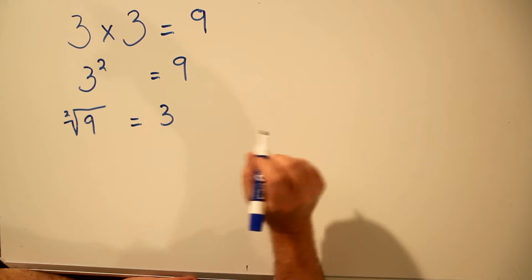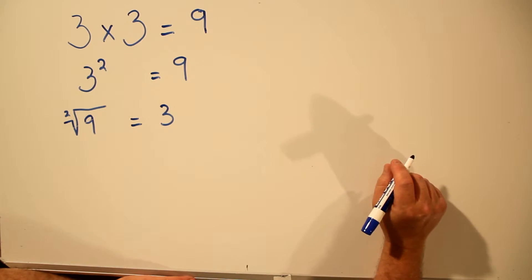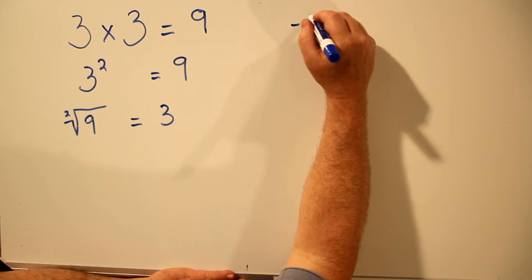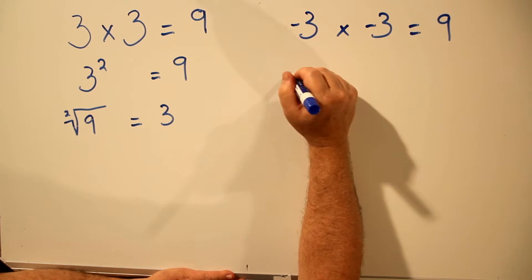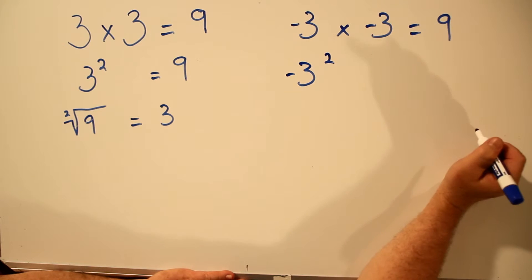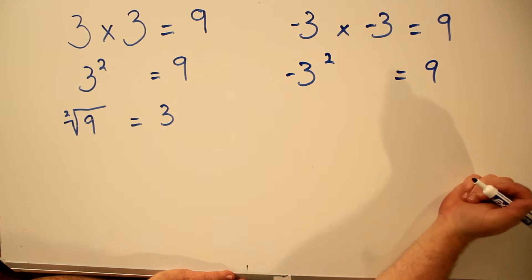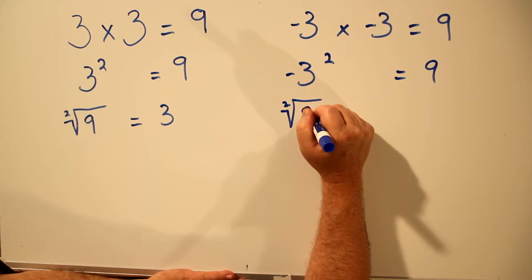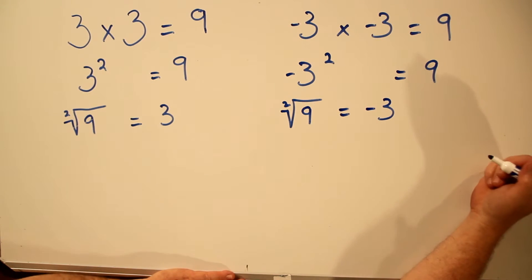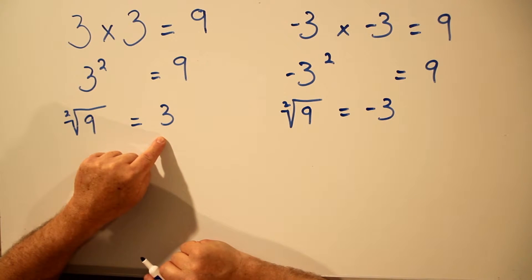So let's go back to the square root of 9 equals 3, because there's something else you need to know. Negative 3 times negative 3 equals positive 9. Therefore, negative 3 squared equals positive 9. It's correct to say the square root of positive 9 equals negative 3.